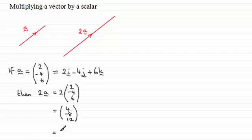Or, in terms of i's, j's and k's, that's 4i minus 8j plus 12k.